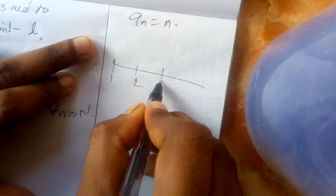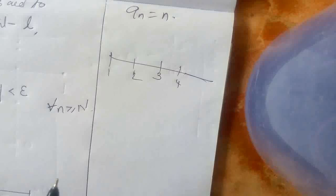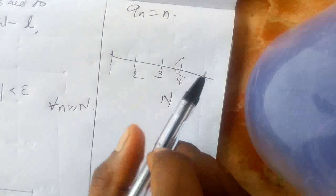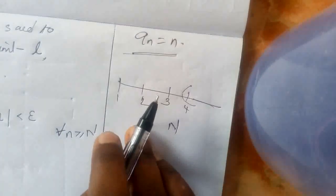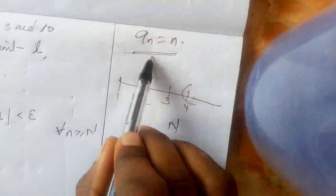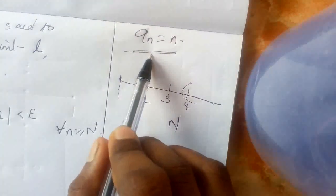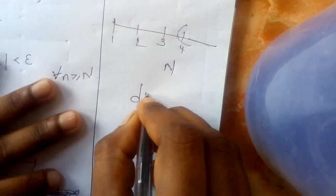For the other sequence a_n = n, we get 1, 2, 3, 4, … After any particular stage of n, it does not go to a particular number — this sequence goes to infinity. That is why we say a_n = n does not converge, i.e., this sequence diverges.